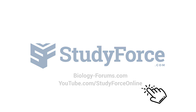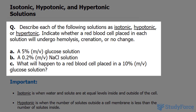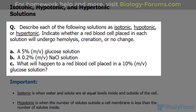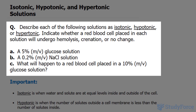In this lesson, we'll thoroughly discuss isotonic, hypotonic, and hypertonic solutions. The question we're answering reads: describe each of the following solutions as isotonic, hypotonic, or hypertonic — three words that we absolutely need to know the definition of before we can answer this question. Indicate whether a red blood cell placed in each solution will undergo hemolysis, crenation, or no change.